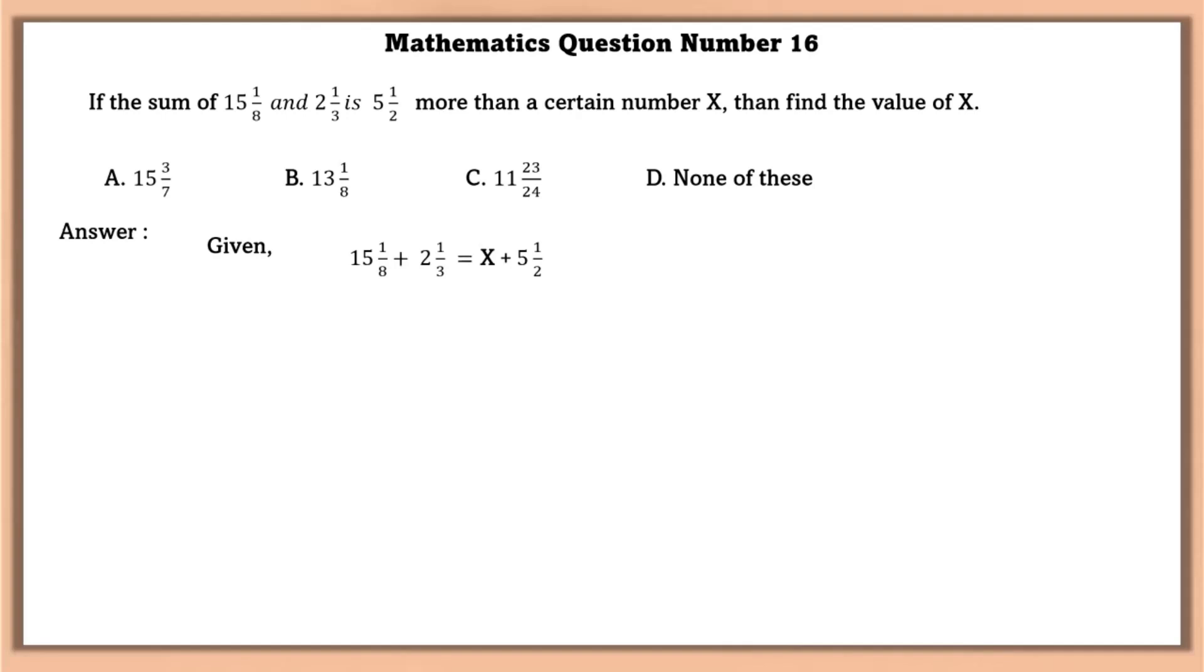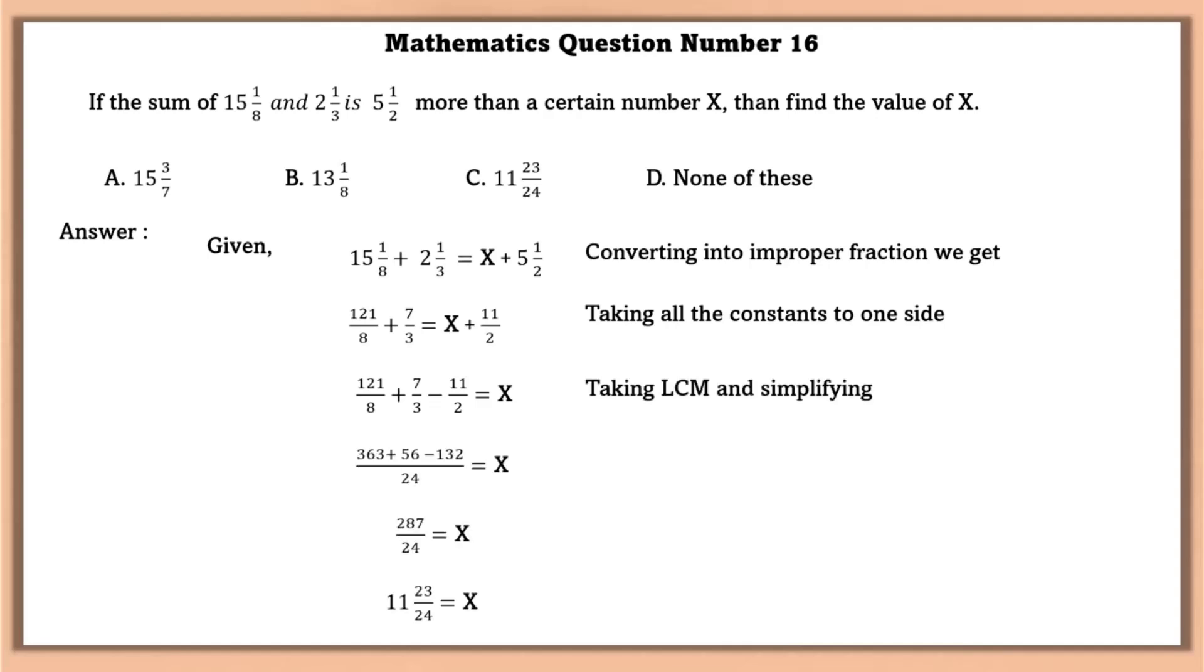Given 15 1/8 plus 2 1/3 is equal to x plus 5 1/2. Converting it into improper fractions, then taking all the constants to one side and leaving the variable to another side, then taking LCM and simplifying, we can find the value of x that is 11 23/24.